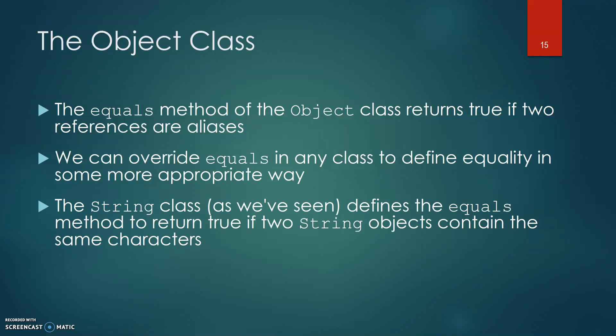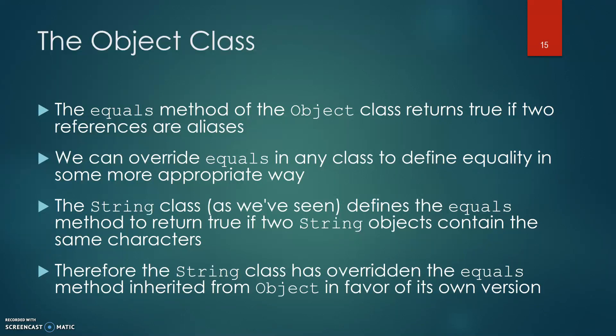The String class, as we've seen, defines the equals method to return true if two string objects contain the same characters. Therefore, the String class has overridden the equals method inherited from Object in favor of its own.